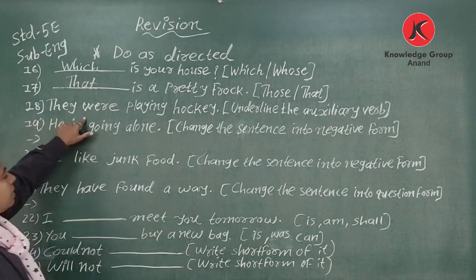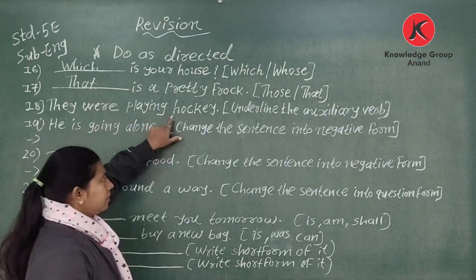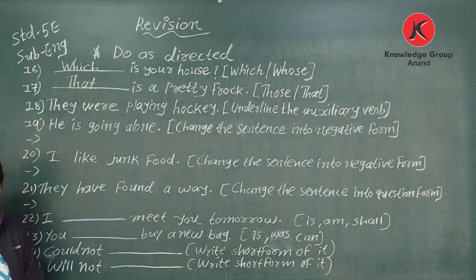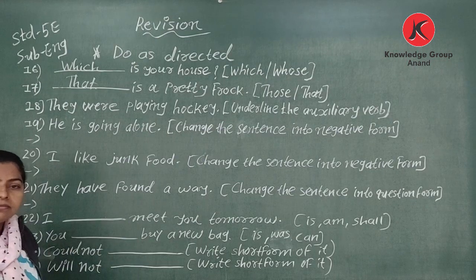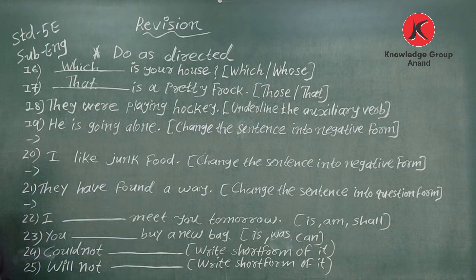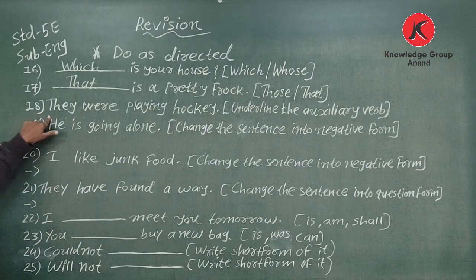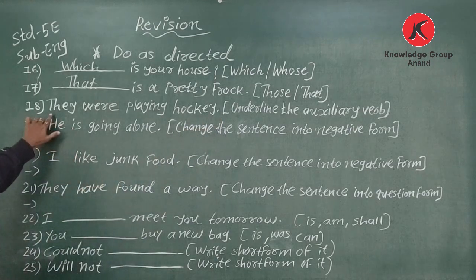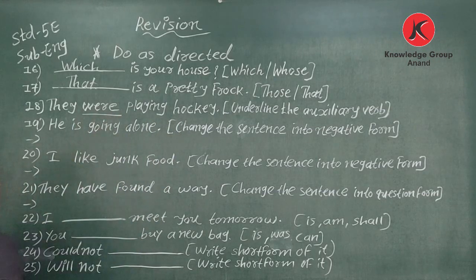Number eighteen: 'They were playing hockey.' Underline the auxiliary verb. Auxiliary verbs you have already learned — is, am, are, was, were, has, have, had. Here we have to identify the auxiliary verb in the sentence and underline it.